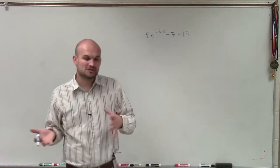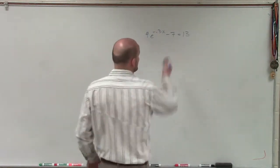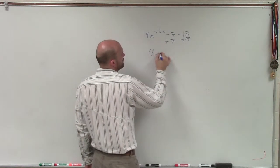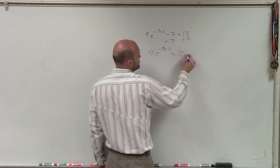So the first thing we always do when we use our inverse operations to solve is we always want to undo addition and subtraction first. So I notice that I'm being subtracted by 7, so I'm going to add a 7 on both sides. So I have 4e to the negative 0.3x equals 20.